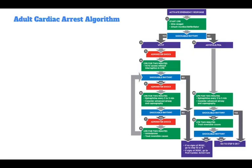I'm going to walk through the adult cardiac arrest algorithm. The first step is to activate the emergency response system. Then you should start CPR, give oxygen, and attach the monitor defibrillator. Then you need to identify if it's a shockable rhythm. If it is, it would be either VF or VT, and you would want to go ahead and administer a shock. Then go back to performing CPR for two minutes, with IV or IO access without interruption in CPR if possible.